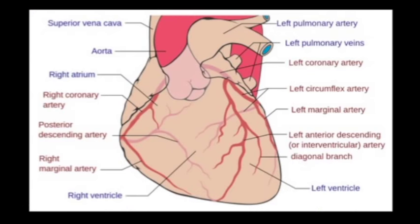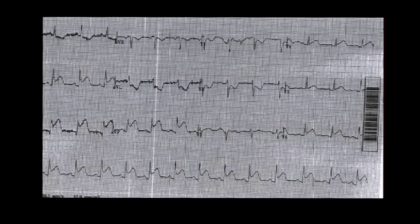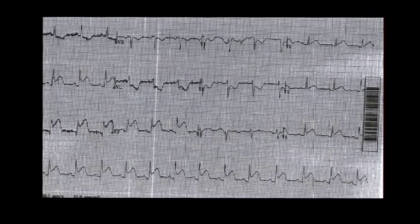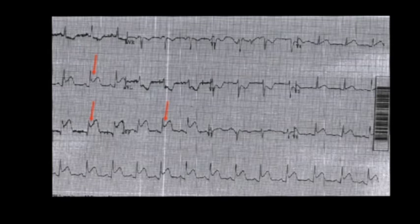The inferior wall of the heart is supplied by the right coronary artery in approximately 90% of patients. So if we occlude the distal aspect of the right coronary artery, we will get an inferior wall MI. On EKG, this will appear as ST elevations in leads 2, 3, and AVF.